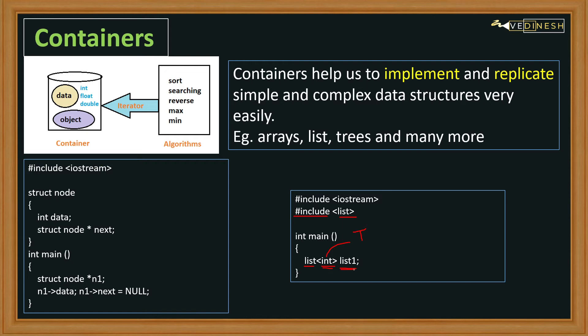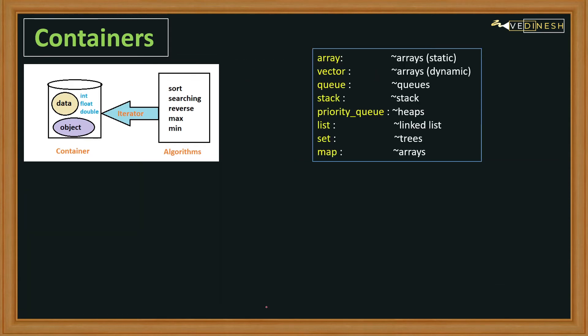So here we're just comparing how it would be with or without containers. Moving forward, these are the various containers we're going to see in this course: array, which is same as the array in data structures; vector, which is also a kind of array with dynamic property; queue, which is the same as queue that we implement in data structures; stack, which is the same as stack.